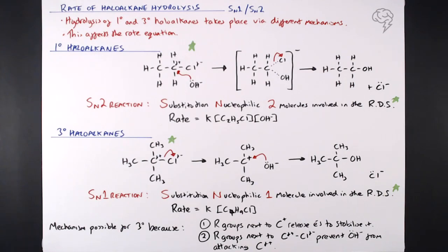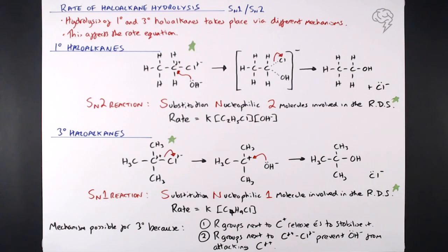So that's the link between SN1 and SN2. The upshot for rate equations: either they involve the halo alkane and the hydroxide ion together, or just the halo alkane alone. An easy way to remember: the 1 in SN1 means one thing in the rate equation; the 2 in SN2 means two things in the rate equation. This is a key link between organic chemistry, rates of reaction, rate equations, and rate-determining steps.